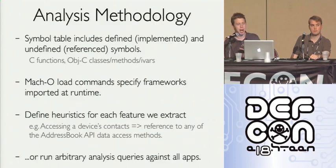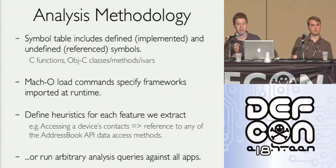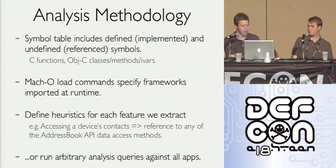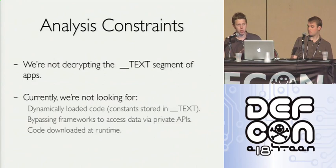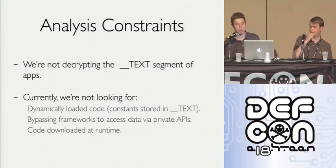To analyze iPhone apps, we look at the symbol table — defined symbols like classes and methods you implement — and undefined references, which are things imported from the platform itself. We also look at Mach-O load commands. Similar to Android, we define heuristics: for example, to know if an application accesses contacts we look for a reference to any of the address book APIs. We can also run arbitrary analysis. We're not decrypting the text section, so we can't look at dynamically loaded code, private API bypasses, or runtime code downloads — but these would likely get an app rejected from the store anyway.